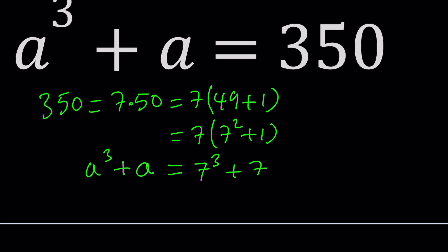Let's replace 350 with a³ + a. Now you have a³ + a = 7³ + 7, which means if a = 7, this equation works. So a = 7 is a solution.